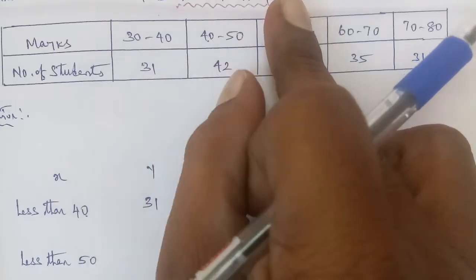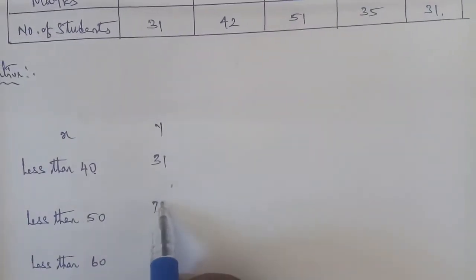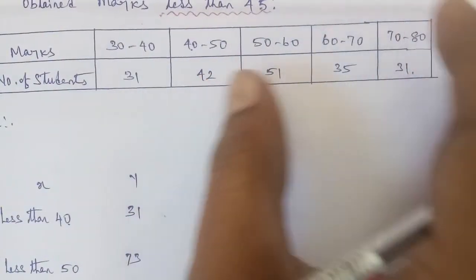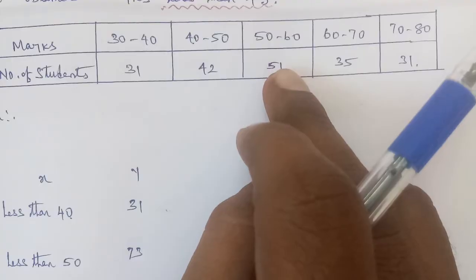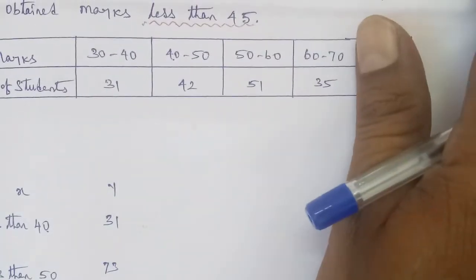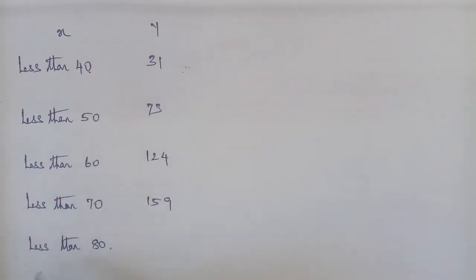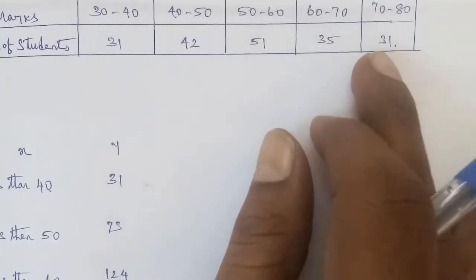We add the frequencies cumulatively. 31 plus 42 gives 73 for less than 50. For less than 60, we add 31, 42, and 51 — the three numbers add to give 124. For less than 70, the first four numbers add to give 159. For less than 80, all five numbers: 159 plus 31 equals 190.